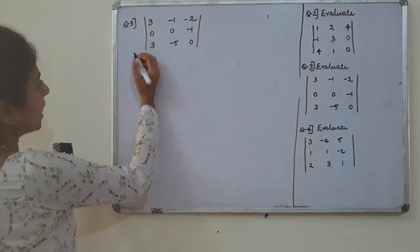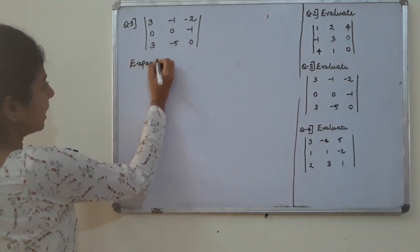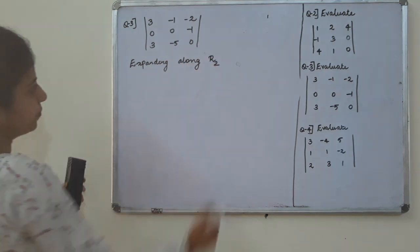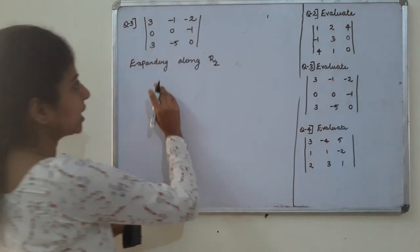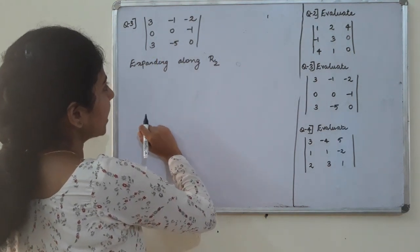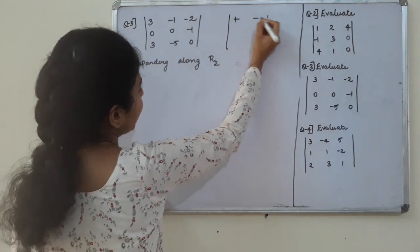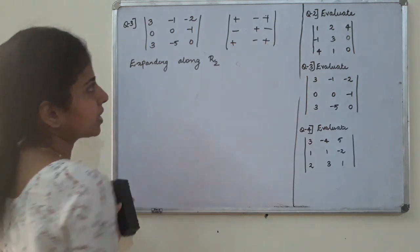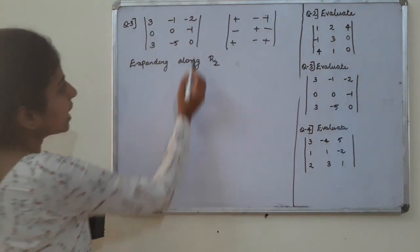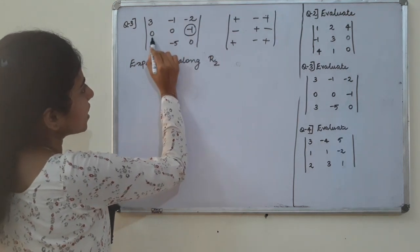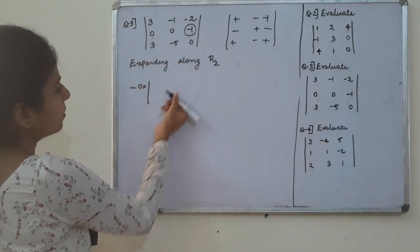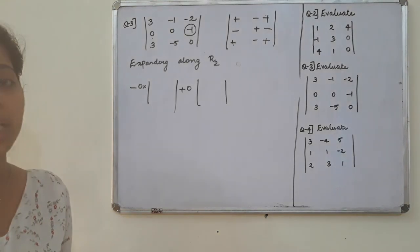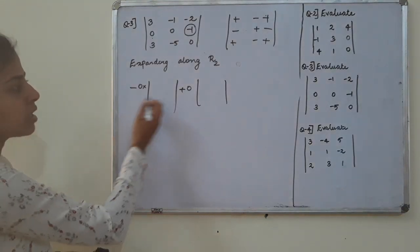Expanding along row 2. We can take row 2. Considering the sign format: plus, minus, plus, minus, plus, minus, plus. These are now the signs for the equation. We start with 0 into something, minus 0 into something — the value of 0 into something is 0.